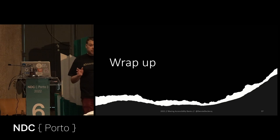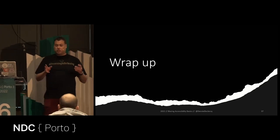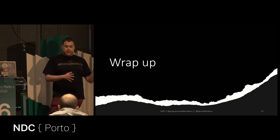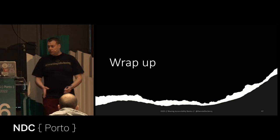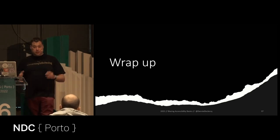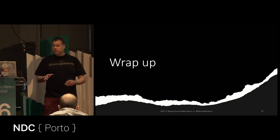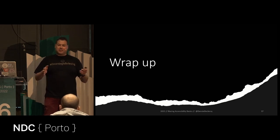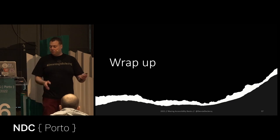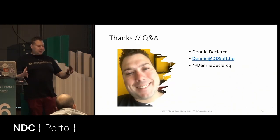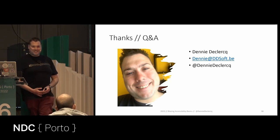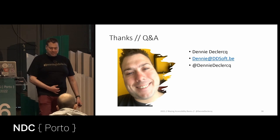Wrap up: we covered the need for accessibility and people with disabilities, the WCAG, the Microsoft Inclusive Guidelines, how to test basic applications, the POUR principles with specific Blazor implementation guidelines. Then we reviewed everything again and I made some jokes about inaccessible websites. Now there's some time for questions.